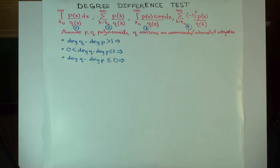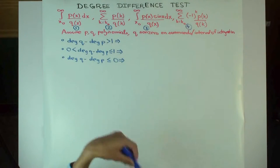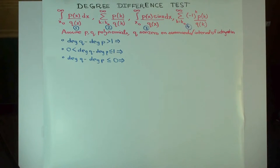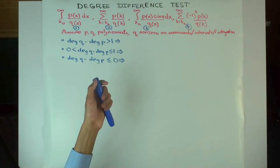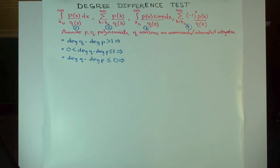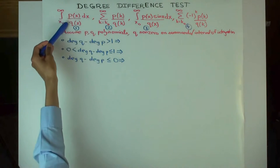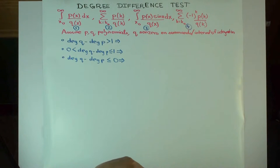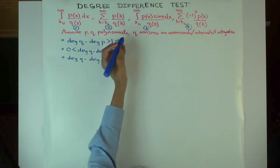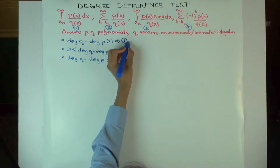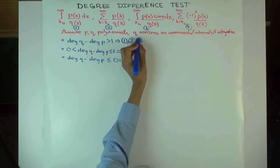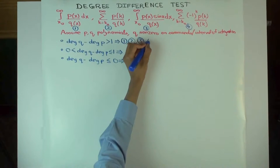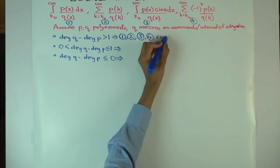Now we want to determine when these things converge. Since P and Q are polynomials, we can take their degrees and compute the difference. The rules are as follows. We look at q minus p — the difference of the degrees. If this difference is greater than 1, meaning the denominator's degree exceeds the numerator's by more than 1, then all four types converge.